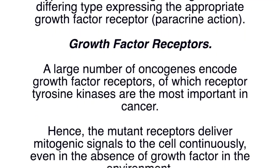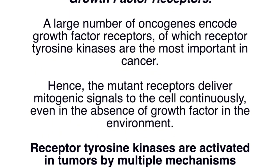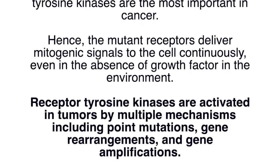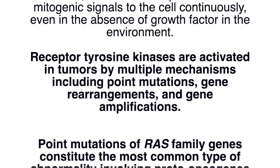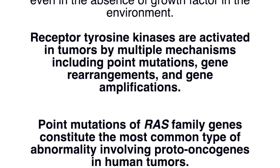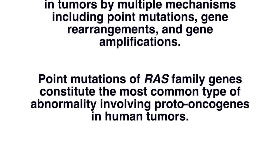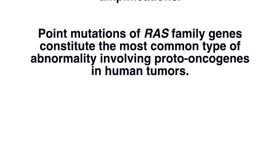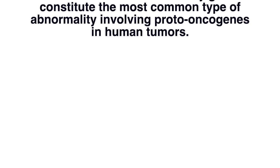A large number of oncogenes encode growth factor receptors, of which receptor tyrosine kinases are the most important in cancer. The mutant receptors deliver mitogenic signals to the cell continuously, even in the absence of growth factor in the environment. Receptor tyrosine kinases are activated in tumors by multiple mechanisms, including point mutations, gene rearrangements, and gene amplifications. Point mutations of RAS family genes constitute the most common type of abnormality involving proto-oncogenes in human tumors.